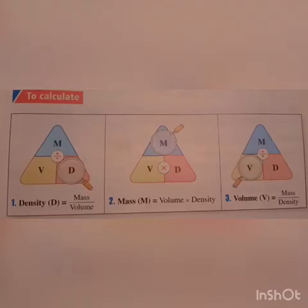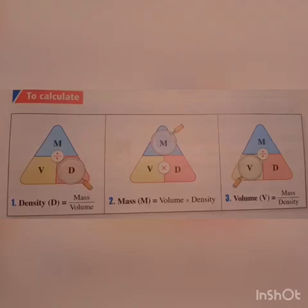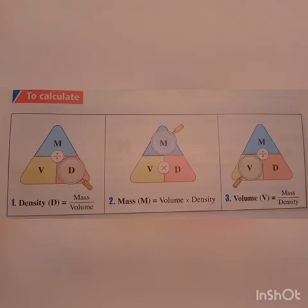From the triangular form you can calculate either mass or volume. When you want to find the mass, the rule is: mass equals volume times density. When you want to calculate the volume, it is: volume equals mass divided by density. The unit of density is grams per cubic centimeter. Thank you for listening.